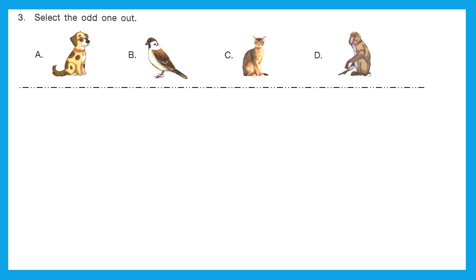Question 3: select the odd one out. Option A is dog, B is bird, C is cat, and D is monkey. The odd one out is option B, bird, because only option B can fly and all others cannot fly.